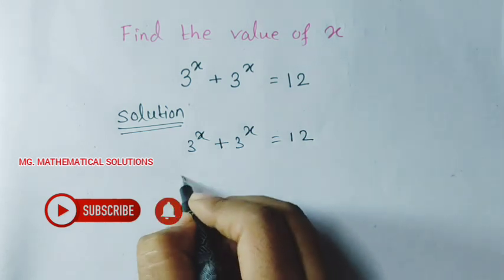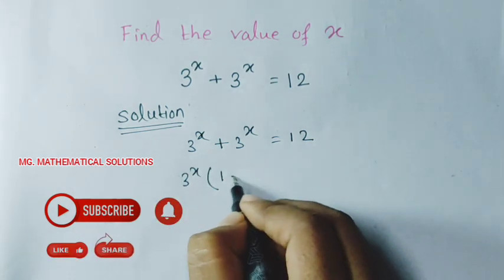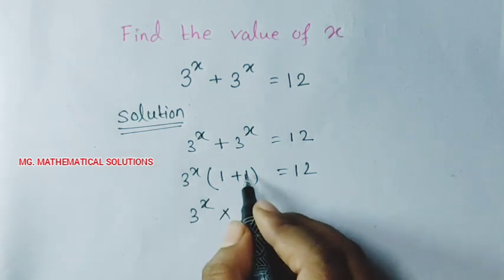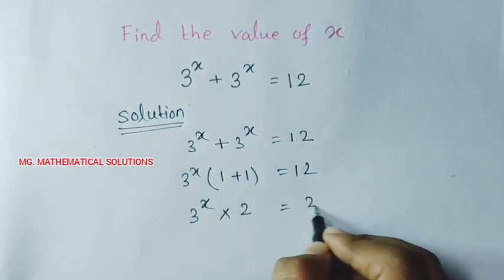Now we take common 3 to the power x so 1 plus 1 equal to 12. 3 to the power x times 1 plus 1 means 2 equal to 12.